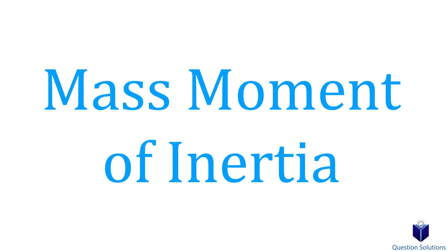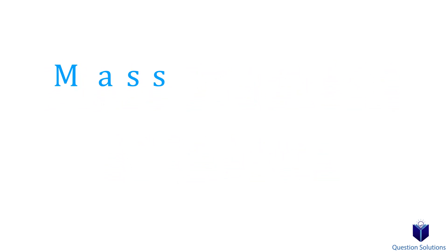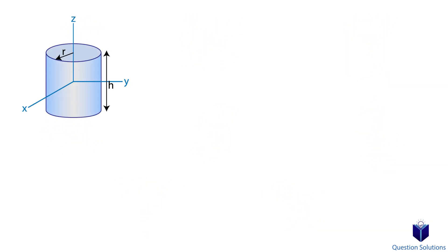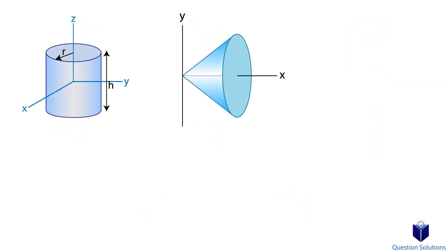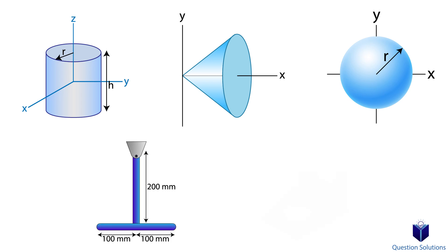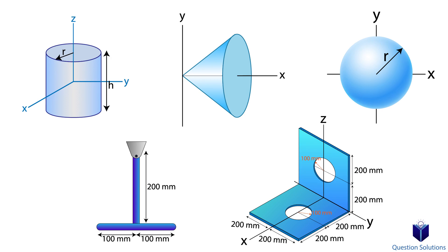Let's talk about the mass moment of inertia. It's a measure of an object's resistance to angular acceleration. We're going to look at a few examples to see how we can find the mass moment of inertia. With the first few examples, we will cover how to find it for random objects, and the last few will cover composite objects and using the parallel axis theorem.